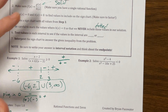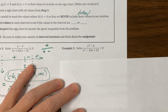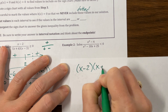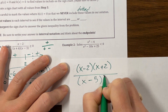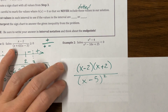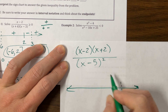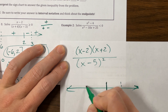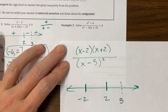Next one — we need to factor. Looking at this one, I can factor the numerator to (x minus 2)(x plus 2). I can factor the denominator to (x minus 5) squared. So I know that positive five is an asymptote, and I'll use a solid line. Negative two and positive two are my zeros.